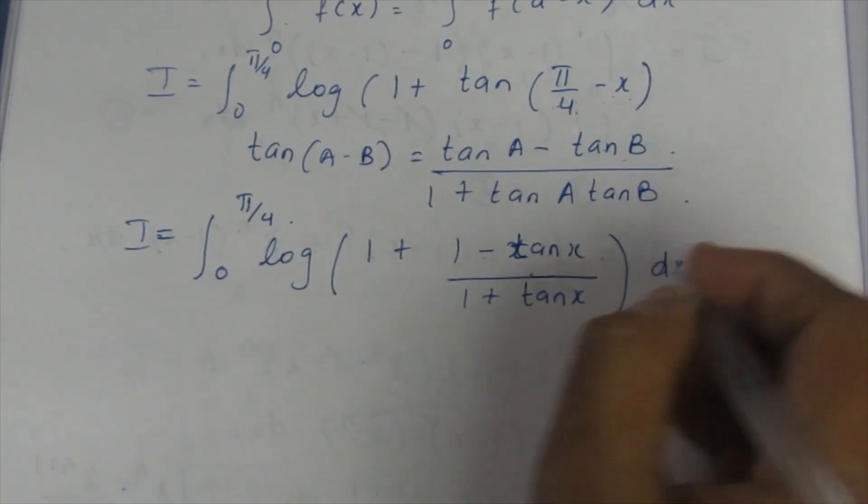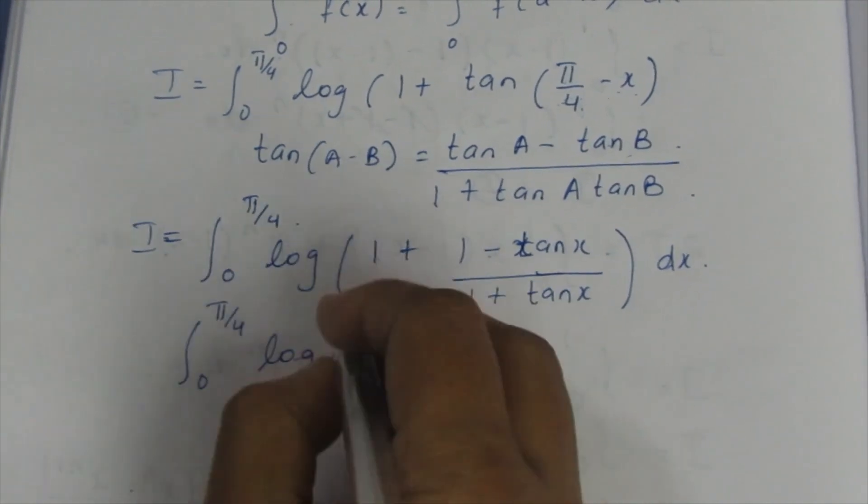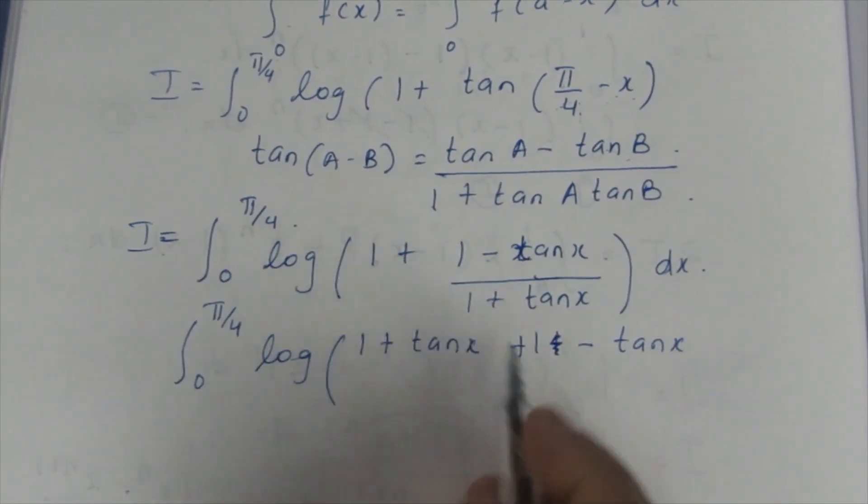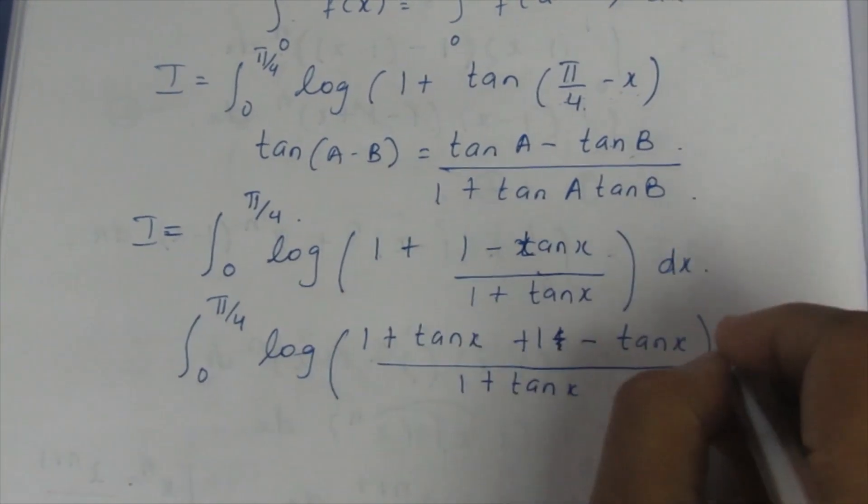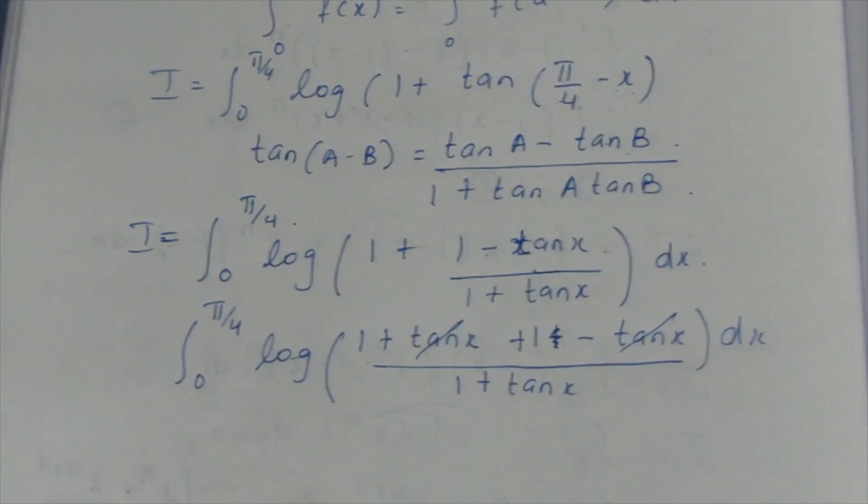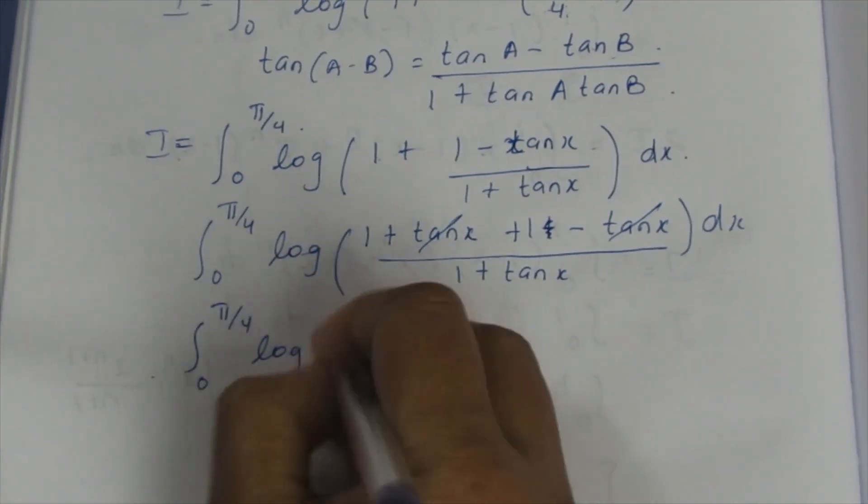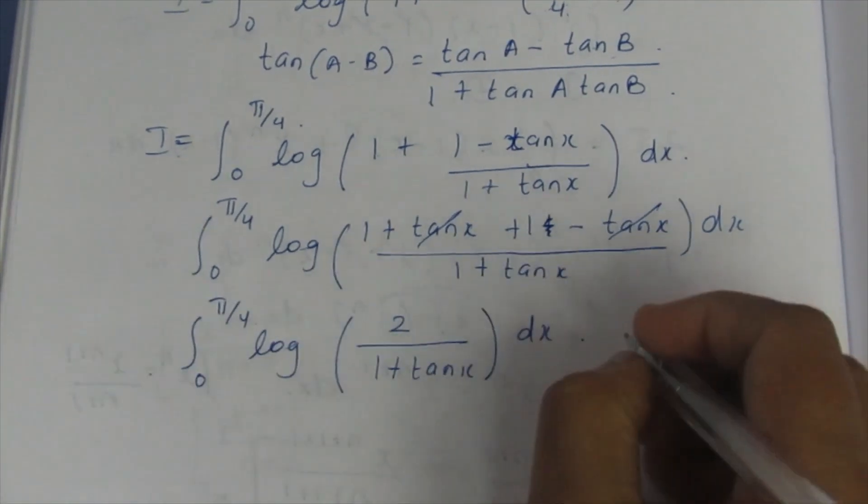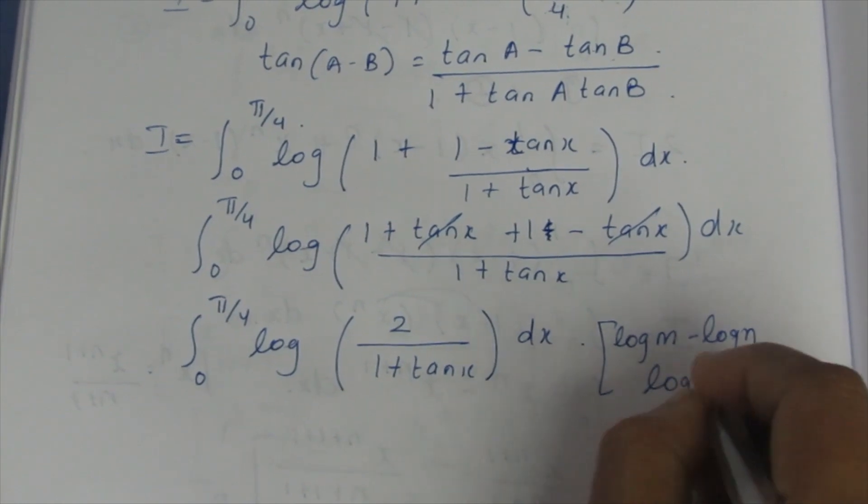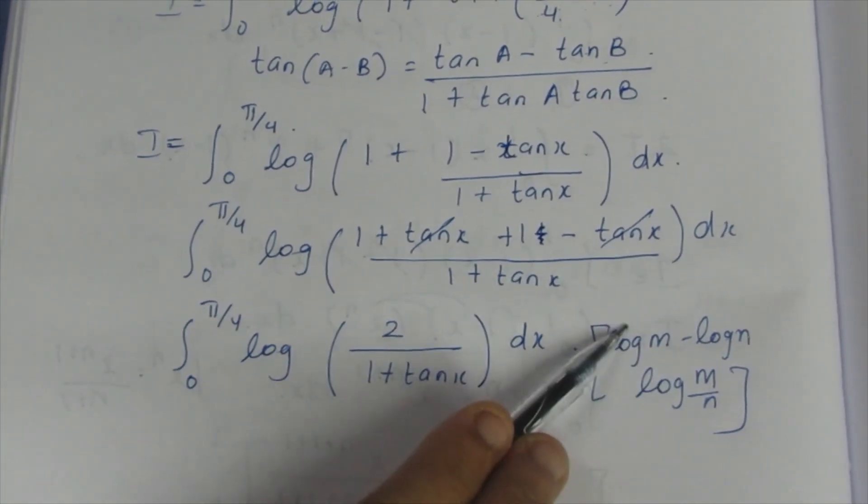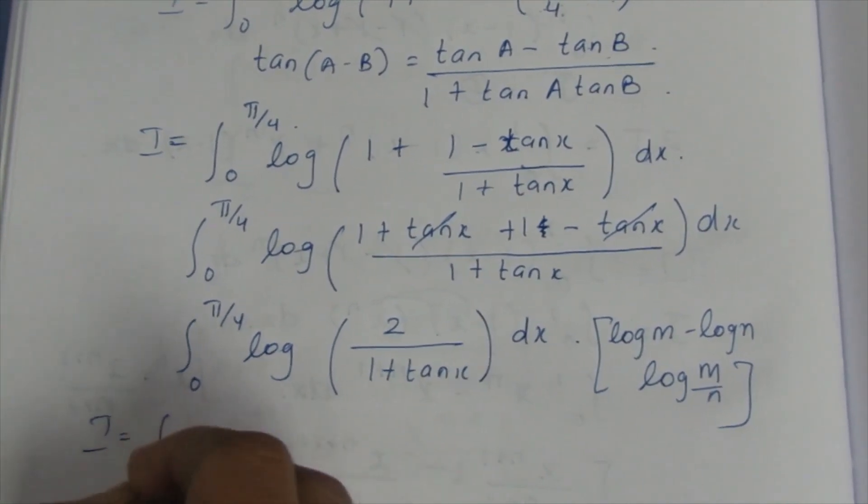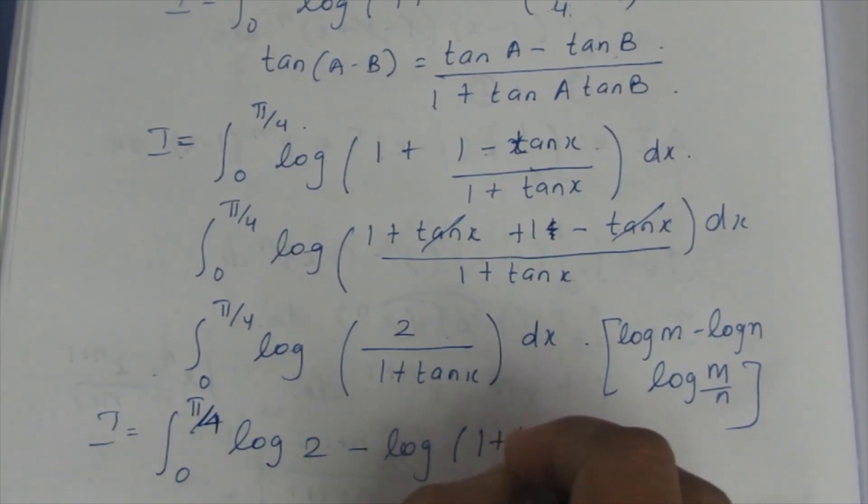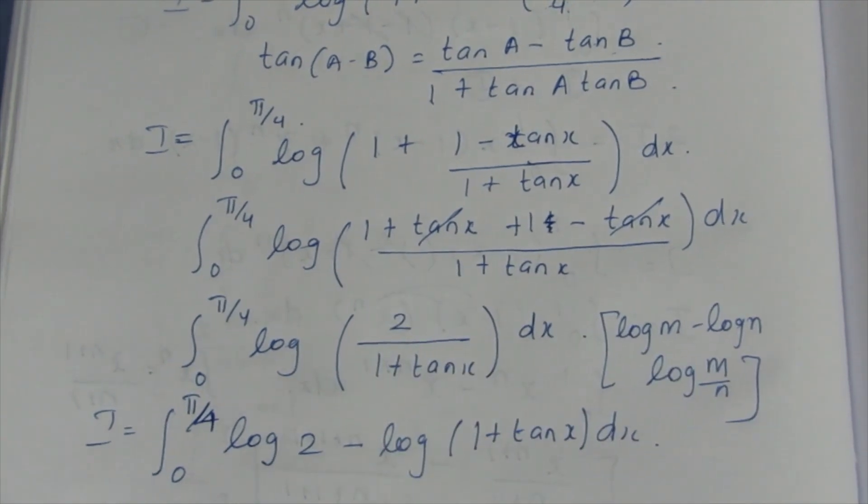Taking LCM, this becomes 0 to π/4 log((1 + tan x + 1 - tan x)/(1 + tan x)) dx. This tan x and this tan x get cancelled. It becomes 2/(1 + tan x) dx. This is in the divide form, so we can write this form as log m minus log n. We know it is log(m/n). I am going to change this form, the divide form to the minus form, and this becomes I = ∫₀^(π/4) [log 2 - log(1 + tan x)] dx.